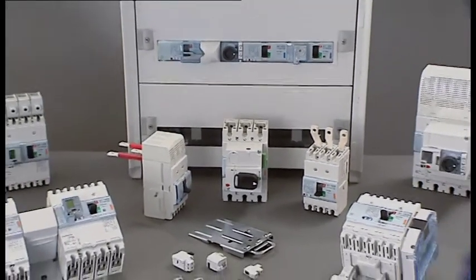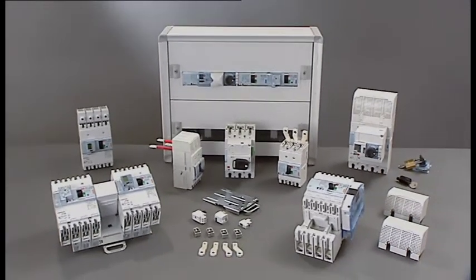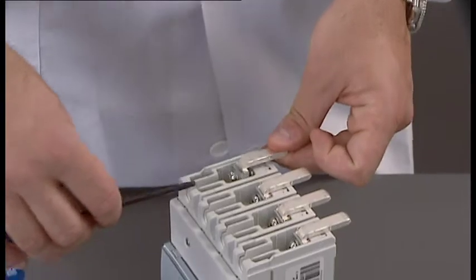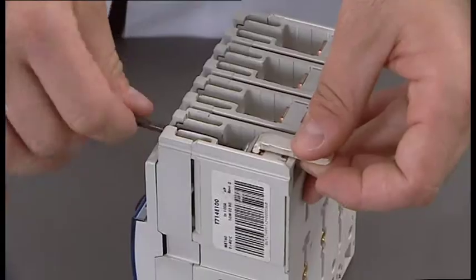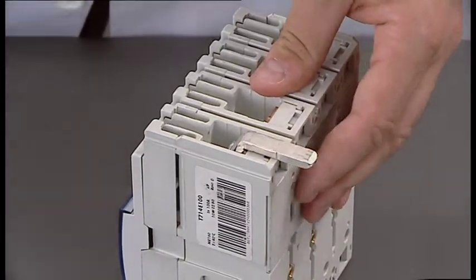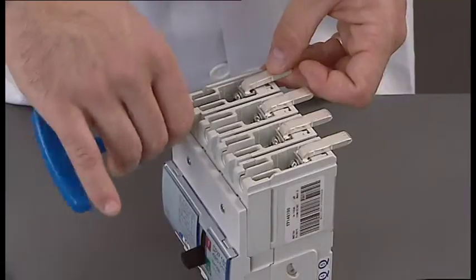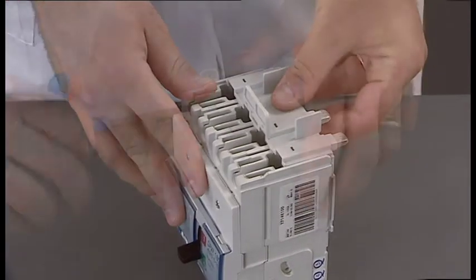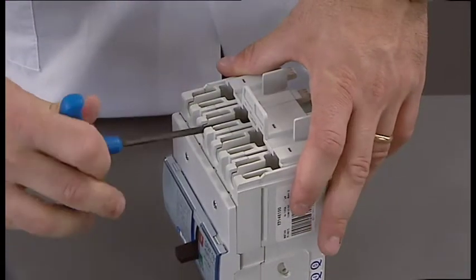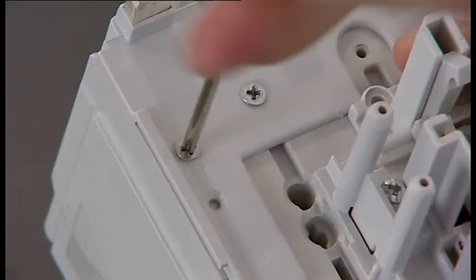The accessories range has also been redesigned for even easier and quicker installation and use. The DPX Cubed Conversion Kit from fixed to plug-in version has been simplified. The tulip contacts are no longer necessary. The MCCBs are fixed directly on the plug-in base.